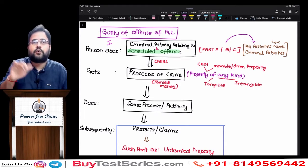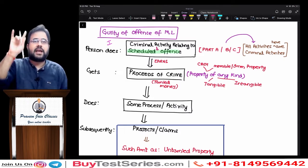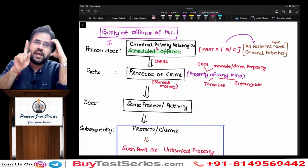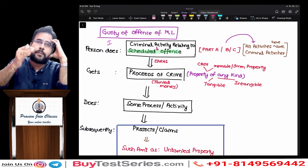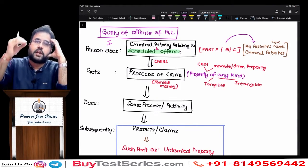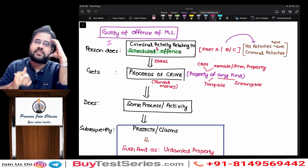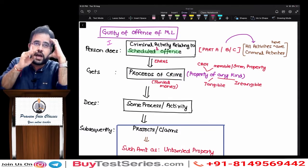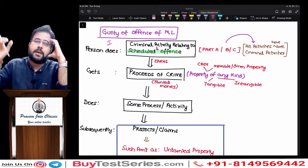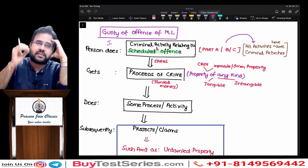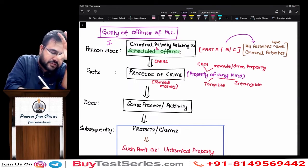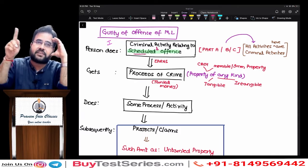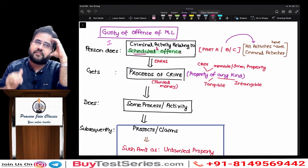The PMLA Act has only one schedule at the end, unlike the Companies Act which had multiple schedules. That one schedule is divided into various parts — Part A, Part B, and Part C. In Part A, we have named certain acts and corresponding to those acts some section numbers are given. Part B has only one act dealing with cross-border transactions. In this schedule, we have named some offenses.